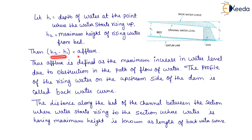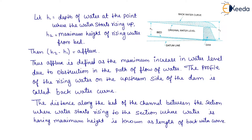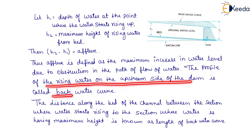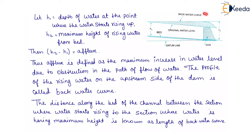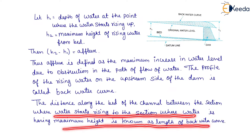And H2 is the maximum height of rising water from the bed, as shown here. Then H2 minus H1 will be the afflux. Thus, afflux is defined as the maximum increase in water level due to obstruction in the path of flow of water. The profile of the rising water on the upstream side of the dam is called the backwater curve, as shown here. The distance along the bed of the channel between the section where water starts rising to the section where water is having maximum height is known as the length of backwater curve.